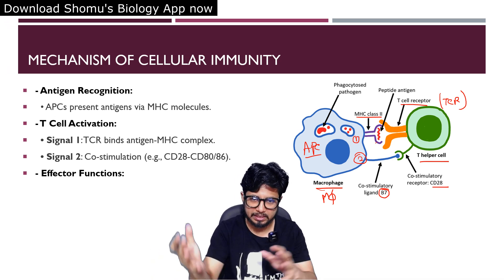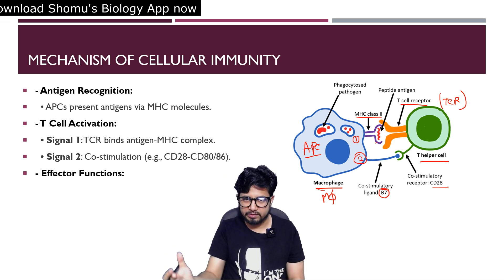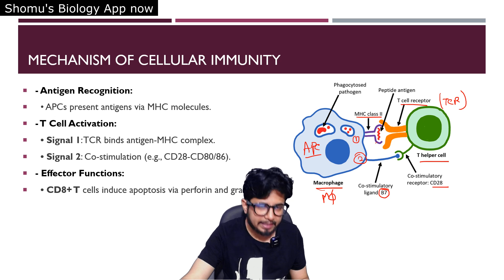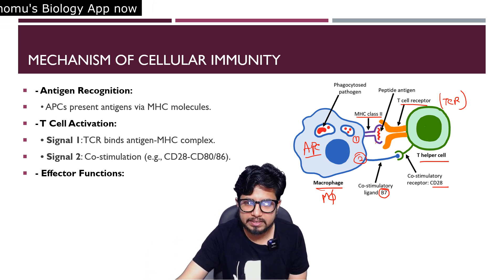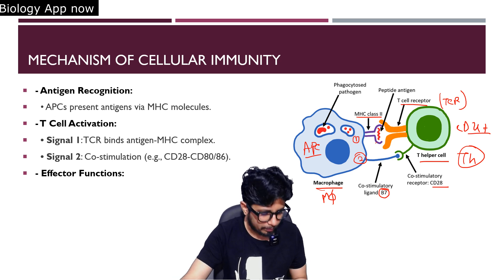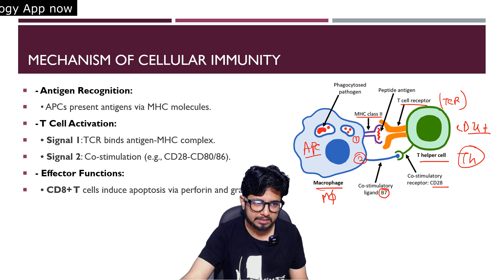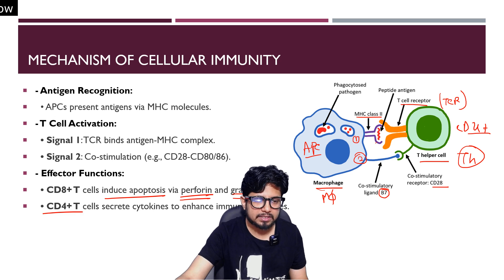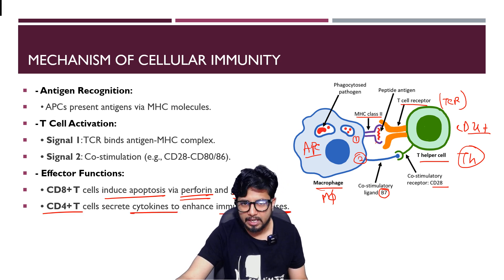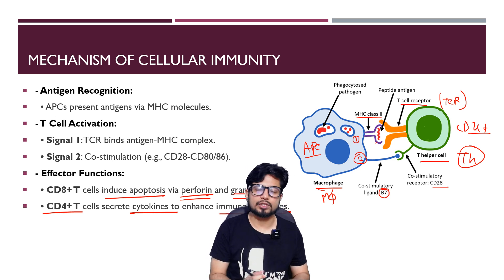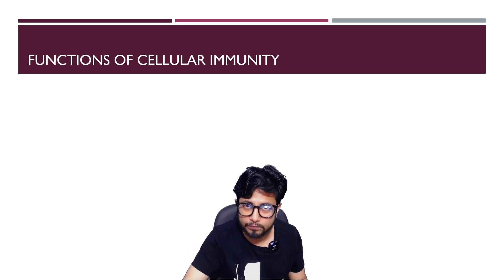After activation, effector functions begin. The macrophage releases interleukin-12, and the T helper cell in turn releases interferon-gamma back to the macrophage, completing the signaling. When CD8-plus cytotoxic T cells are involved, they induce apoptosis by releasing perforins and granzymes — perforins create pores in the membrane and granzymes destroy the cell. CD4 T cells secrete cytokines including interleukin-12, interferon-gamma, and tumor necrosis factor alpha to enhance and activate further immune cells.